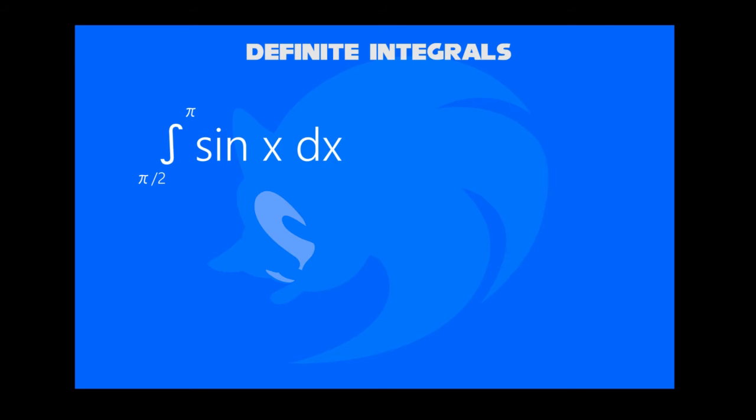For example, take sin x dx ranging the limit from pi over 2 to pi. We know pi by 2 is 90 degrees, and pi is 180 degrees.